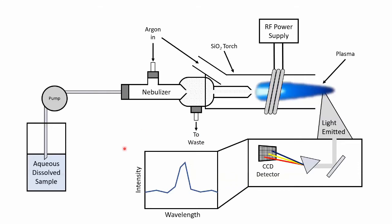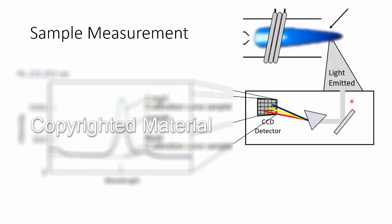That light is measured and separated with a prism. If you're looking for a particular element, you're looking at one single wavelength emitted from that element and you measure the intensity of that light. For example, if you're looking at lead atoms in your solution, you've picked out a particular wavelength, you have a calibration sample — a known concentration — and a blank. So you have two data points on your plot that give you a line, and then you measure your sample intensity, see where it falls on that line, and calculate the concentration of lead in that sample.